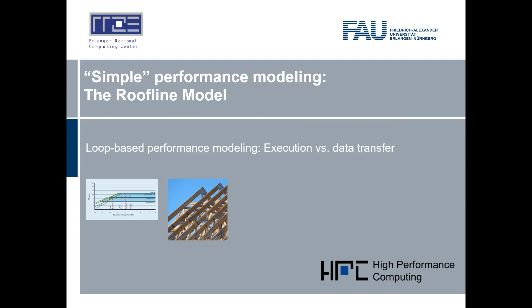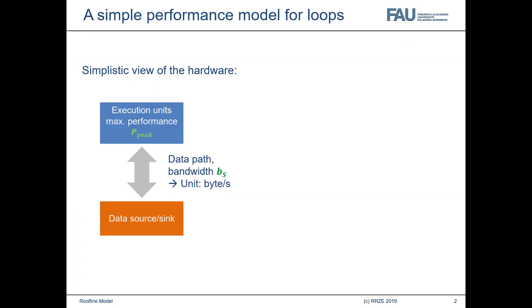This is a quick and easy introduction to the simple roofline model, or as we call it, the naive roofline model. The naive roofline model is probably the simplest but still useful performance model for steady state loops in high performance computing. It is based on some very simplistic assumptions, and the assumptions are so simple that it's actually surprising that we can get anything useful out of this model.